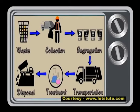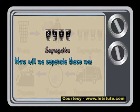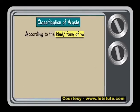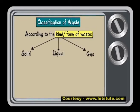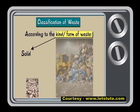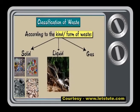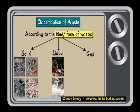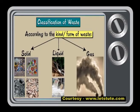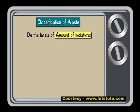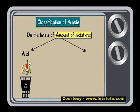Now that we have collected waste from all the various places of its origin, the next step is to segregate or separate them. There are certain ways by which we can classify the waste. According to the kind or form of waste generated, we classify waste into three categories. Solid waste can be easily seen; it is generated from different types of activities like construction, industries, mining, domestic use, etc. The wastewater from our homes and the liquid chemical effluents from various industries are liquid waste. Gaseous waste includes poisonous gases from various industries. On the basis of the amount of moisture present in the waste, it is of two types: wet waste and dry waste.